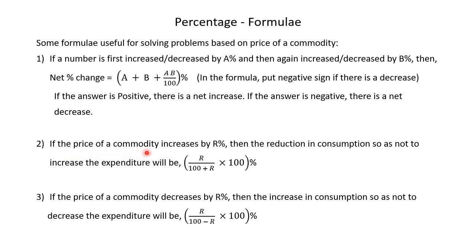If the price of a commodity increases by r percent, then the reduction in consumption so as not to increase the expenditure will be r/(100 + r) × 100 percent. If the price of a commodity decreases by r percent, then the increase in consumption so as not to decrease the expenditure will be r/(100 − r) × 100 percent.